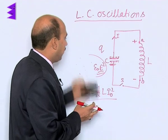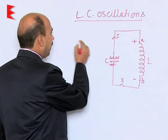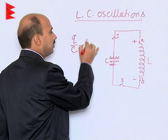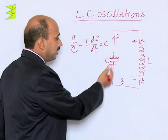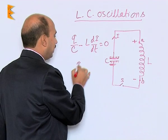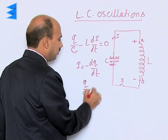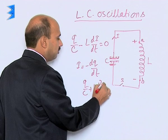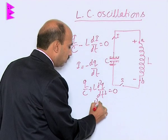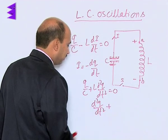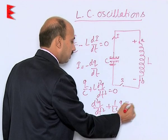In this circuit, initially when the charge has the maximum value in the capacitor, we can write according to Kirchhoff's rule: Q/C − L(dI/dt) = 0. As charge decreases, current increases, and we can write I = −dQ/dt. Substituting this gives: Q/C + L(d²Q/dt²) = 0, which we can rewrite as d²Q/dt² + (1/LC)Q = 0.